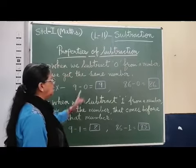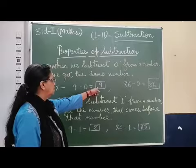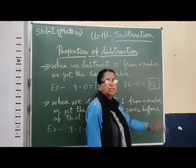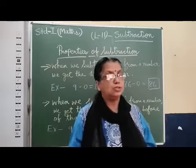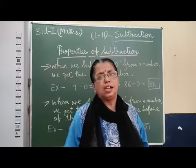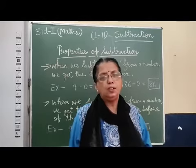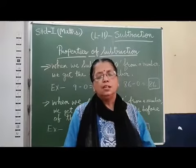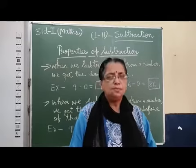One example: nine minus zero — see, the same number comes as the result: nine. Eighty-six minus zero: eighty-six only. If I give one thousand minus zero, then one thousand will be the answer. If I give nine hundred ninety-nine minus zero, nine hundred ninety-nine will be the answer. So whatever may be the number, if you subtract zero from a number, you will get the same number.